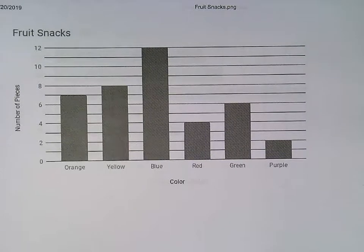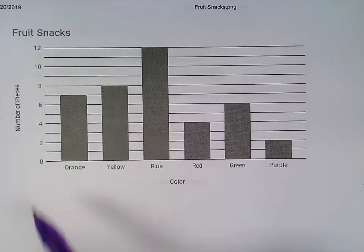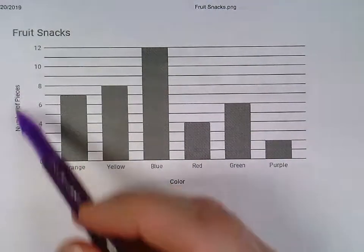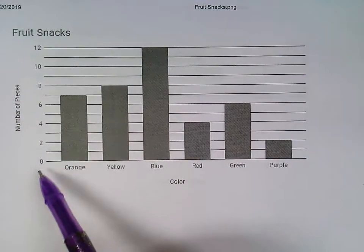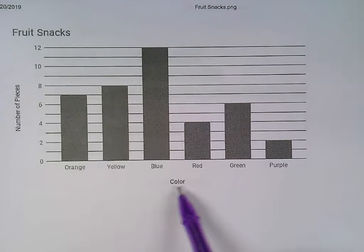Bar graphs need to have a title and they also need to have labels on them. So this label here, number of pieces, tells you that's what these numbers mean. This label down here, color, tells you what these words mean.